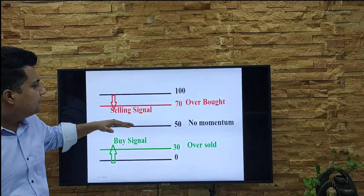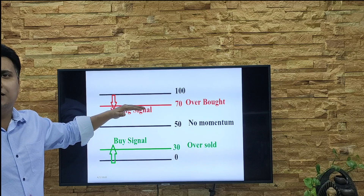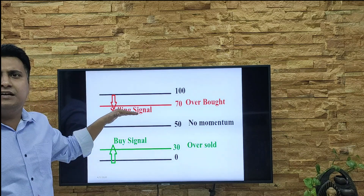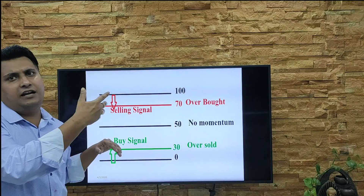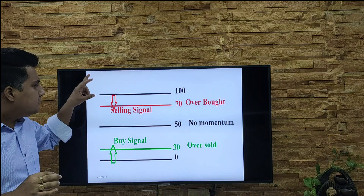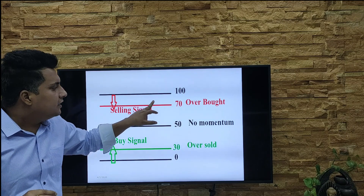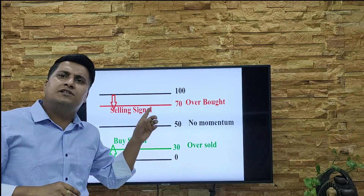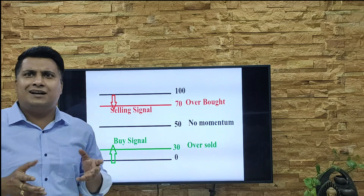When the RSI goes from 50 up to 70 — and I told you 70 is the overbought level — the question is: once it hits 70, shall I go for a sell? No. Once it hits 70, it's quite possible it will cross 70 and go to 80, 85, 90, or 95 also. You have to just observe. Once you observe, you come to know how high it will go — wait until your RSI indicator gives an indication of reversal of trend.